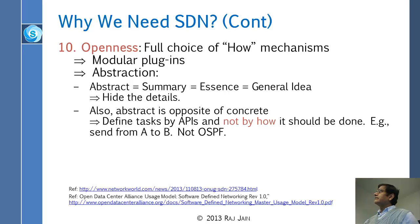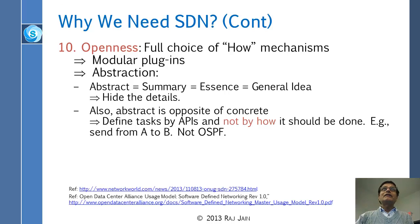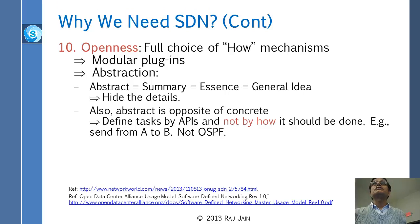Tenth, openness: people should have full choice of how they want to get there. Everything should be defined by abstraction. Abstraction means the essence — the general idea — not the concrete how. Concrete is how; abstract is the opposite. For example, we say 'find the shortest path from A to B,' not 'use OSPF.' Yes, OSPF can give you shortest path, but that is the how.